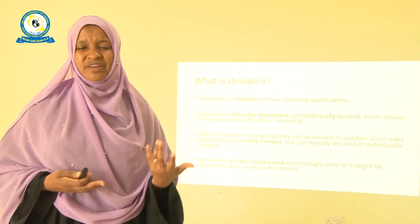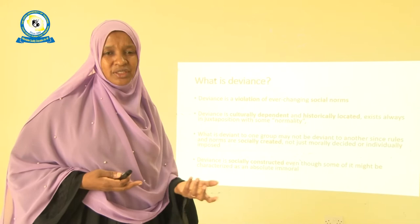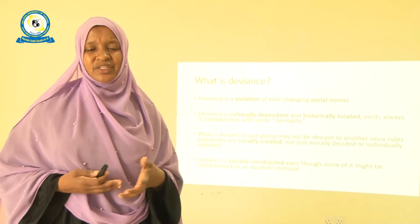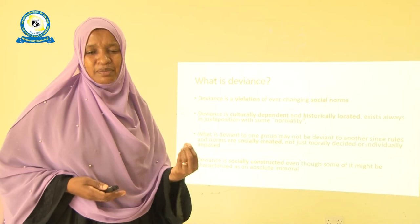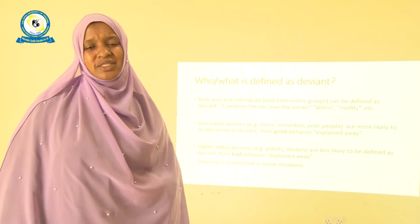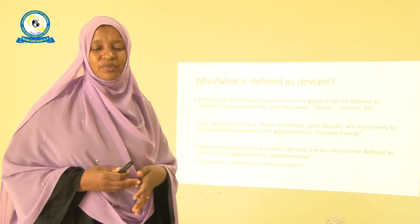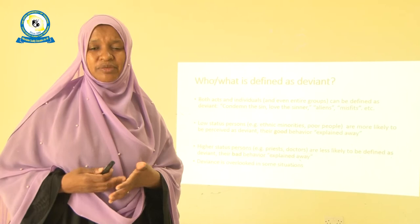Deviance is not necessarily just a moral decision or determined by an individual person. In nature, deviance is socially constructed, even though some might characterize it as abnormal or absolutely immoral in some cases. Sociologists say that both acts — in terms of an action — as well as an individual, or sometimes even an entire group, can be defined as being deviant.